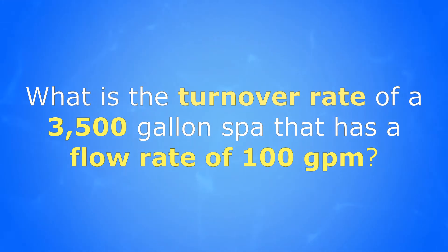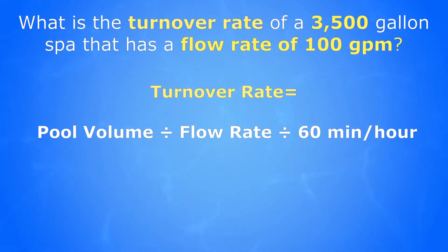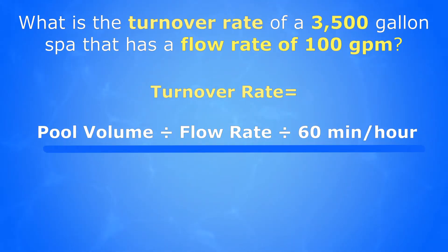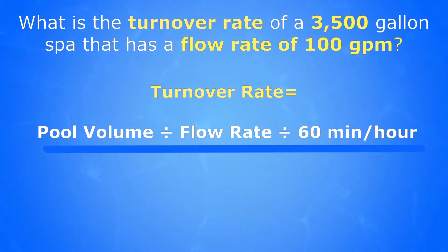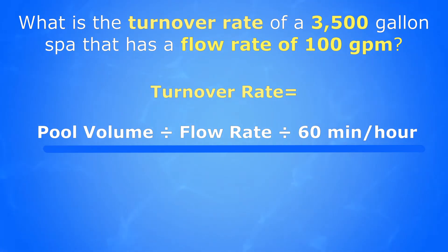So first we want to look at the formula that we're going to use. Turnover rate equals volume divided by our flow rate, divided by 60, which is part of the formula.